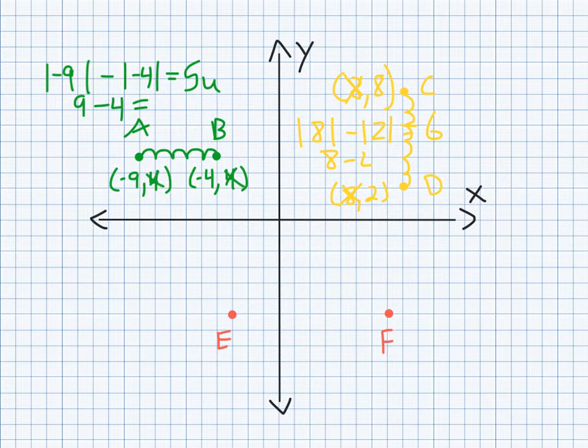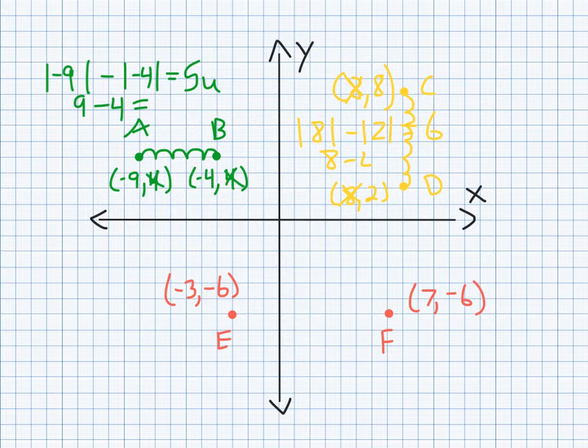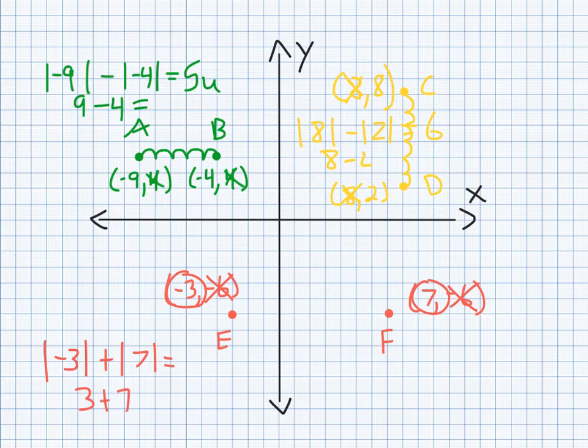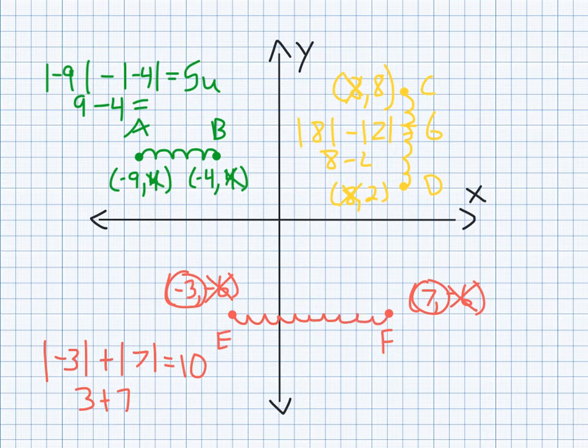So last one, E and F. Okay, so we have negative 3, negative 6 for E, 7, negative 6 for F. We are crossing the 0, Y line. Alright, so as you can see, our negative 6s are the same in our Y coordinate. We're going from negative 3 to 7. So in this case, we're going to add our absolute values. In this case, it doesn't matter which order you put them in, because adding can be either or, since we have the commutative property of addition. So that's just going to be 3 plus 7, which of course is 10. So we can check it. 1, 2, 3, 4, 5, 6, 7, 8, 9, 10. And the distance between E and F was 10 units.